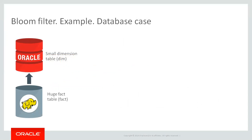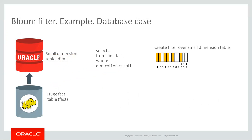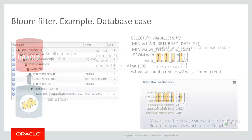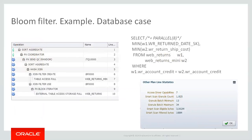Let me give a practical example. Imagine you store a small dimension table in Oracle database and a huge fact table in Hadoop and you want to join them. You create a bloom filter in Oracle database and push it down to the Hadoop side, applying it there. Running the query and looking at the plan, the join filter creation tells us we create a bloom filter from the small dimensional table in the database.